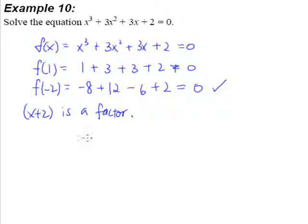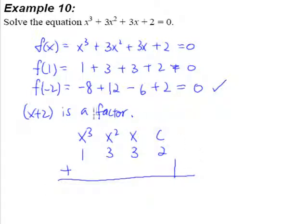So what do we do? Well, of course, we will try to do the synthetic division. So the synthetic division, one more time: the coefficient of x cubed is 1, coefficient of x squared is 3, coefficient of x is 3, the constant term is 2. So this will be a plus here, and in this little corner we put in our x value. So if x plus 2 is a factor, x equals negative 2.